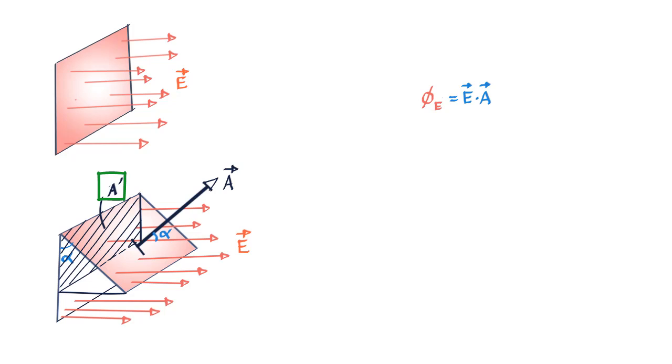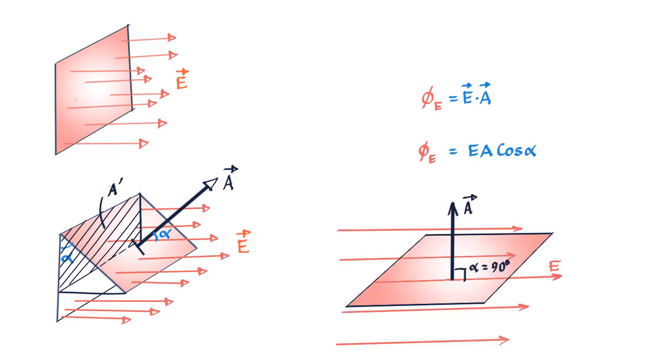This area we know is A cos alpha. We can then write the equation for electric flux as phi is equal to EA cos alpha. Once again we see that if alpha becomes 90 degrees, no electric field line passes through the rectangle and the flux becomes zero.